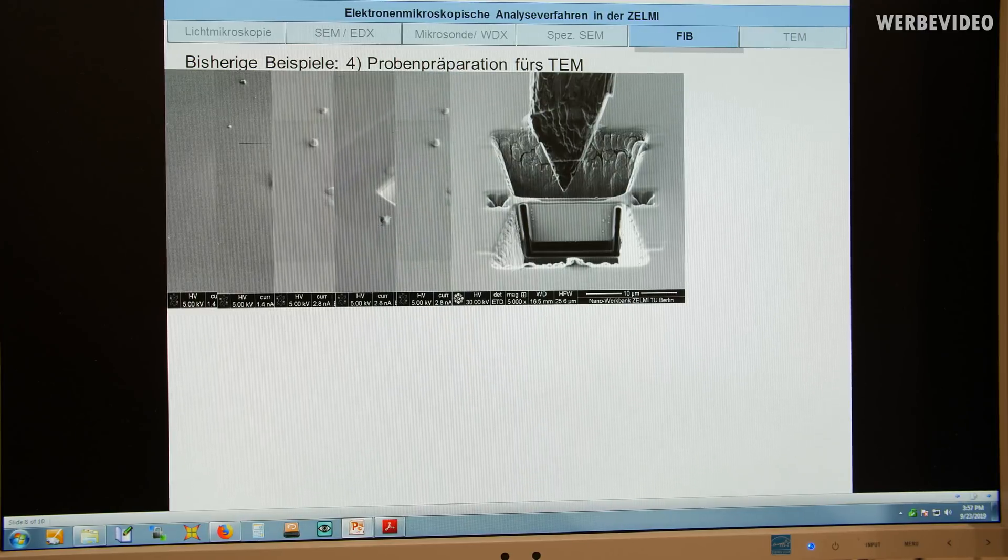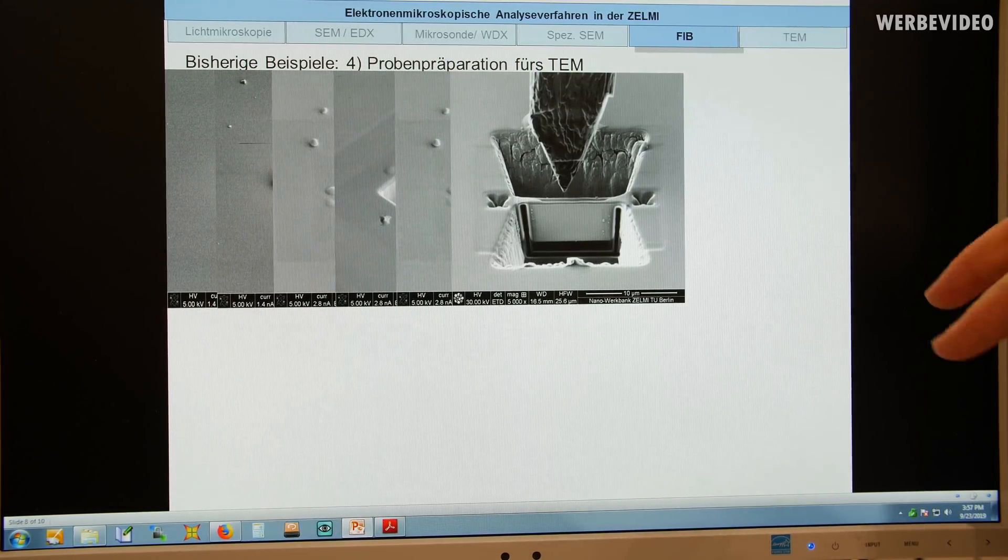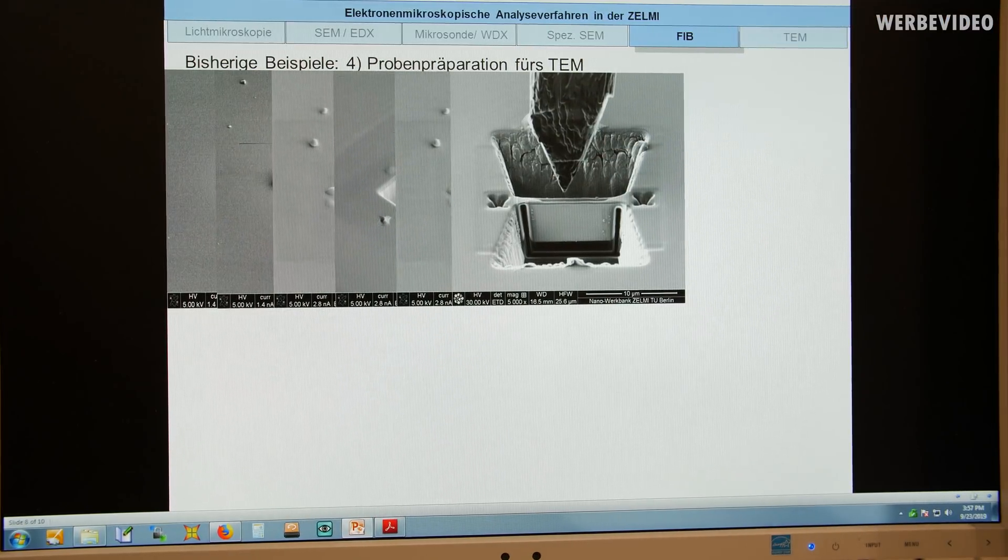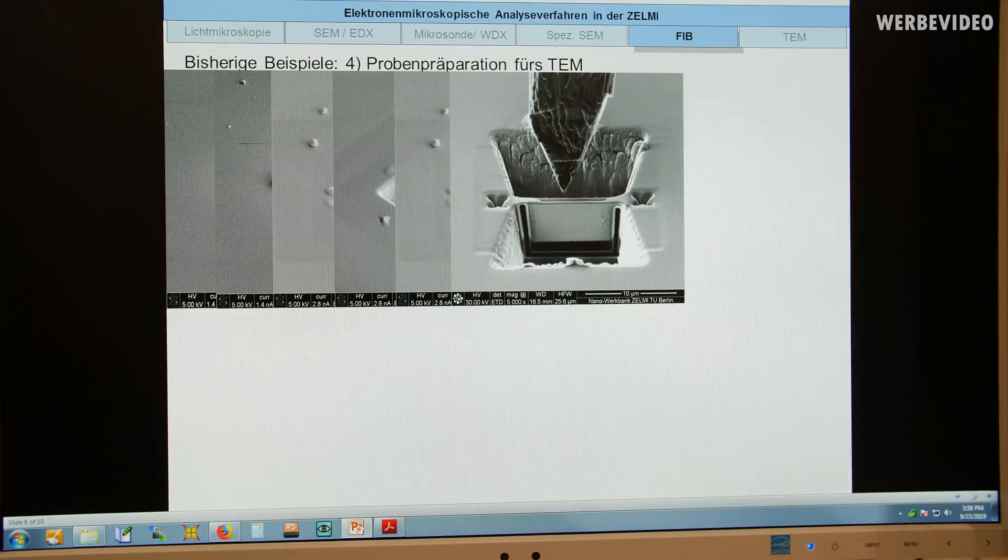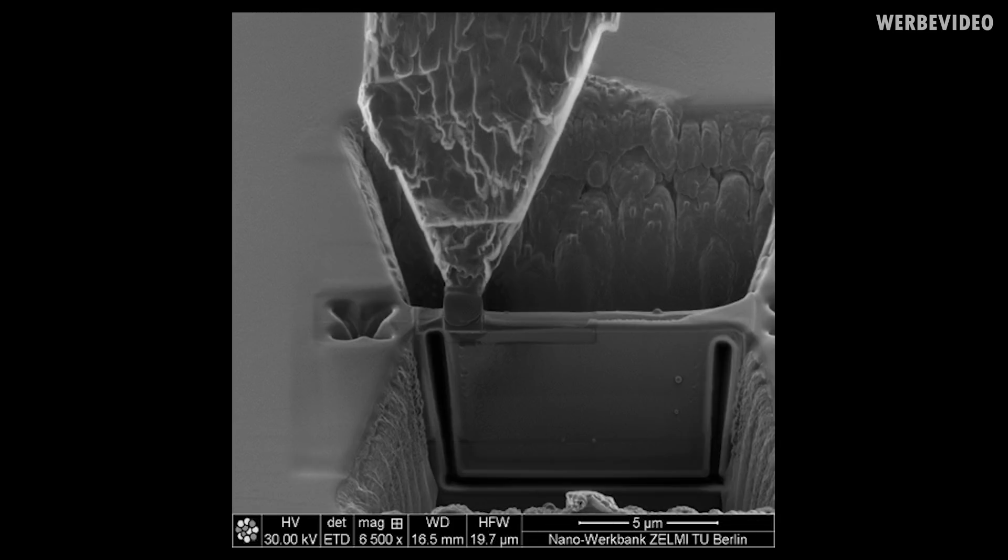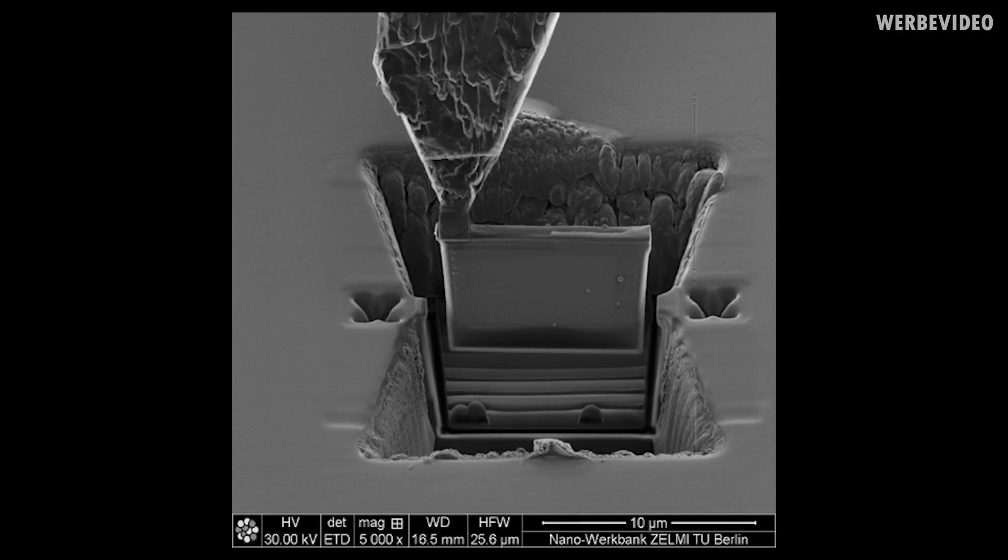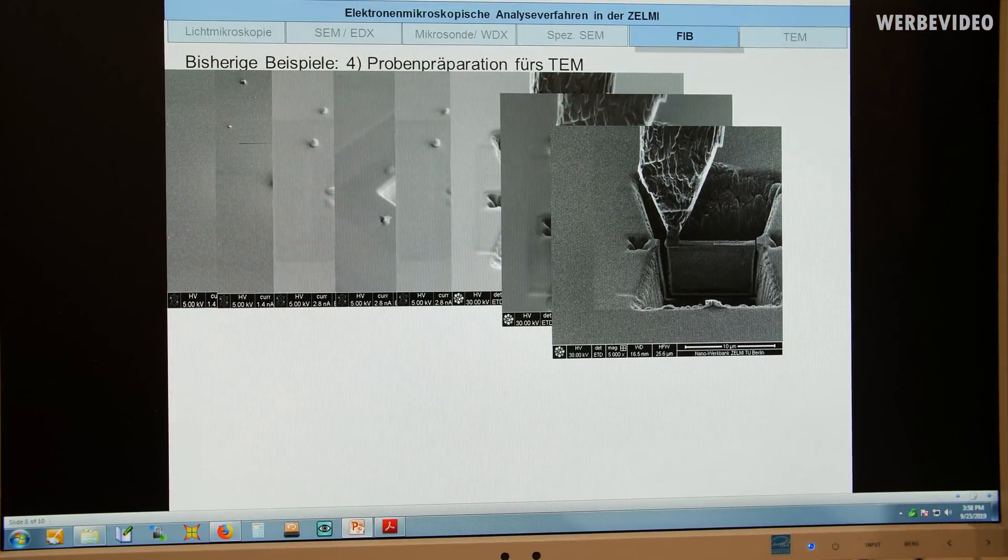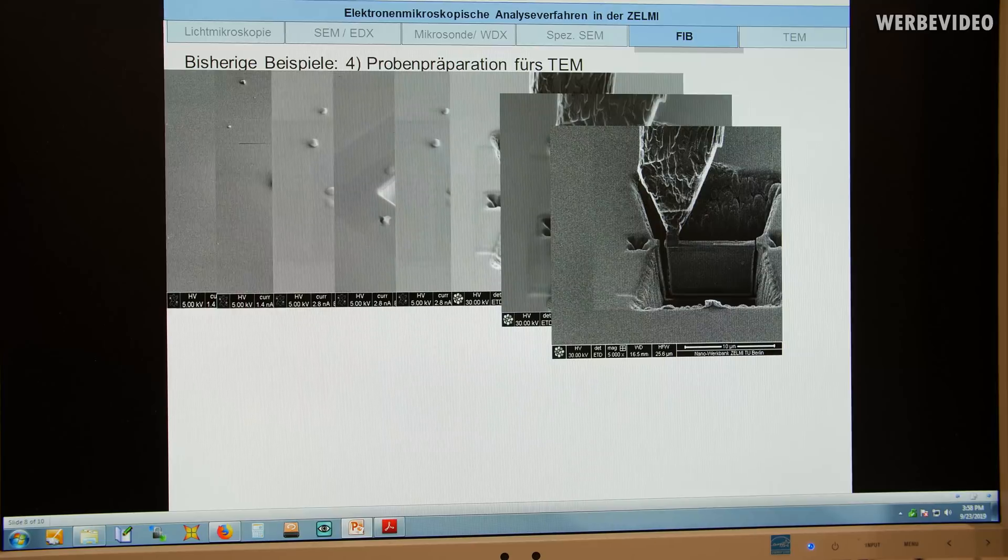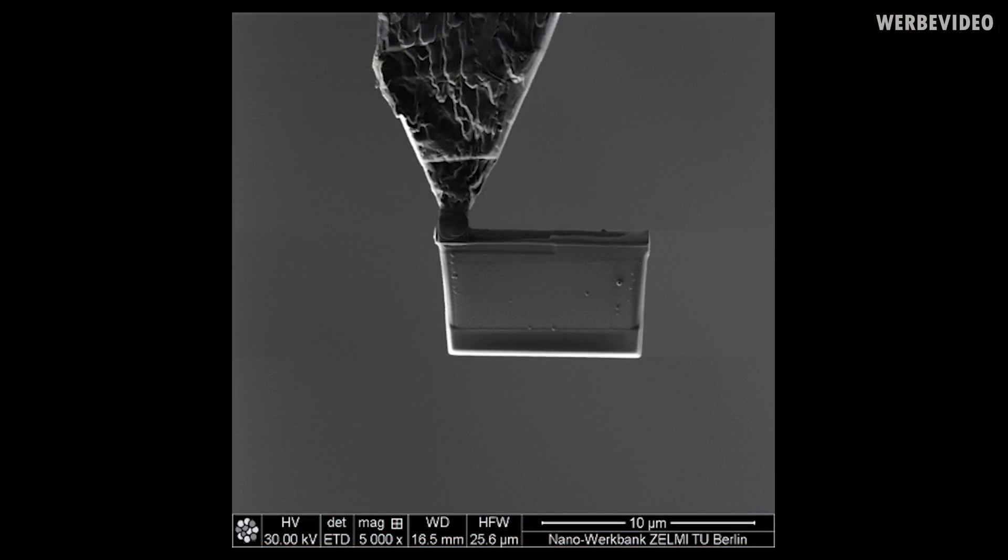So we can't use tweezers or anything else, mechanical tools to bring it to the TEM for the analysis. Therefore, we have this transfer needle. And first we start to cut a U-shape into the specimen, release it from the TEM lamella from the specimen. And now we will fix the transfer needle on top of the TEM lamella. This is just done with a platinum deposition, as you saw before. And now we release the TEM lamella. We cut it on both sides. And then this transfer needle, it's written with piezo actuators. And with this we can release the TEM lamella now. You can see that we slowly move it. And now it's completely released.